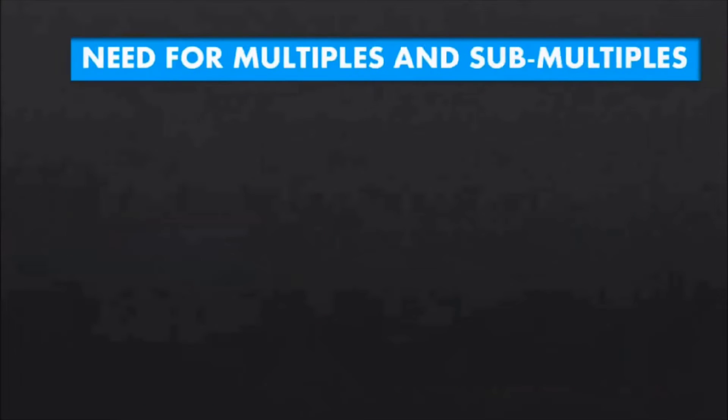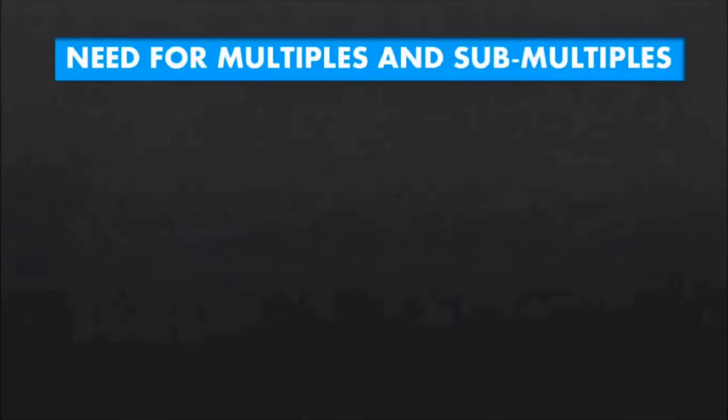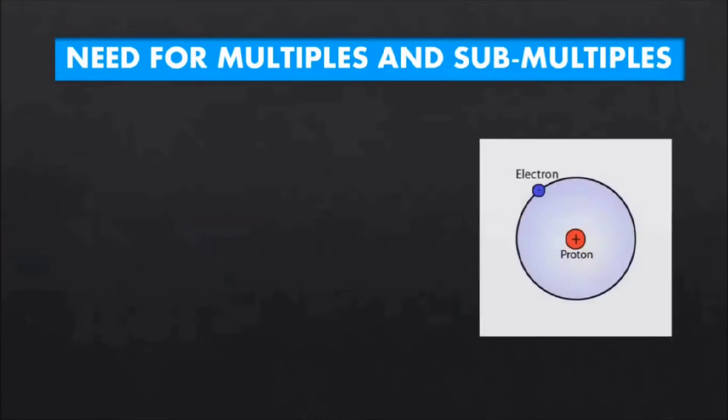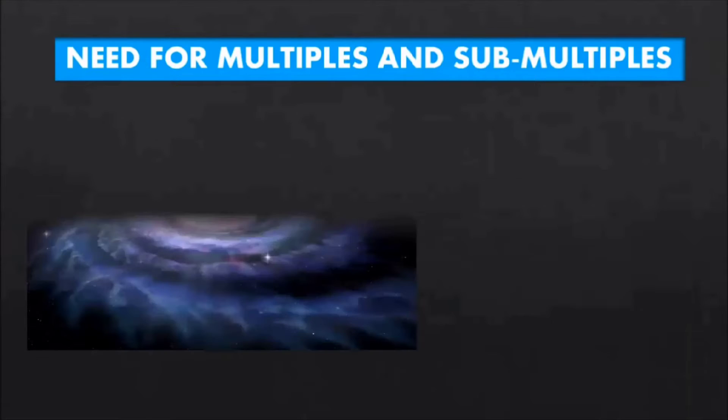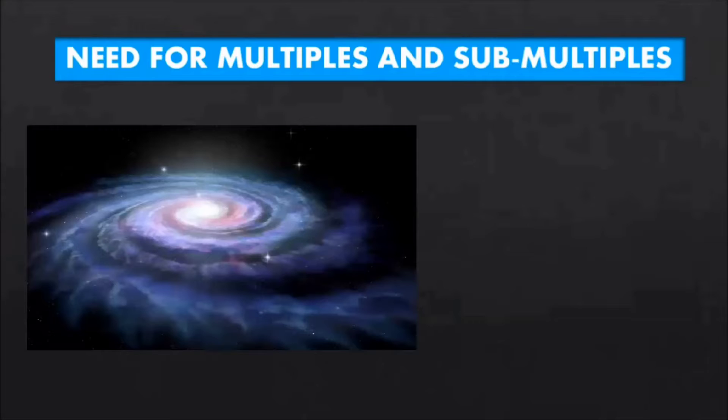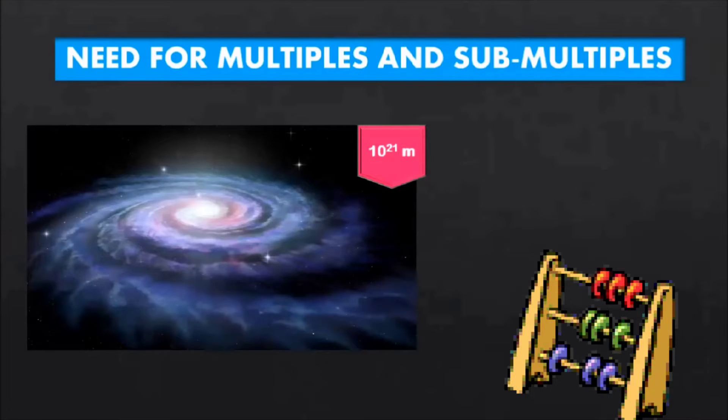Now the question: why do we need multiples and submultiples? The magnitude of physical quantities vary over a wide range. For example, size of a hydrogen atom is in the range of 10 power minus 10 meters, and the size of our galaxy, that is Milky Way, is around 10 power 21 meters. That's 21 zeros after the digit 1.